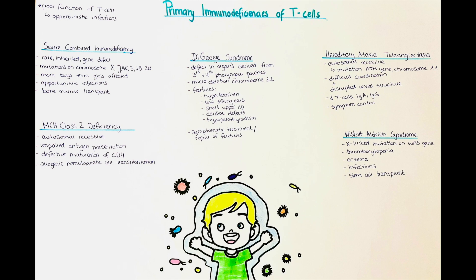We will start talking about severe combined immunodeficiency. It is a profound group of rare inherited immunodeficiency disorders, and many of them are linked to gene defects within the X chromosome. A mutation within JAK3 on chromosome 19 as well as a mutation on chromosome 20 can also cause severe combined immunodeficiency. Most causes are X-linked, but mutations in chromosomes 19 and 20 are also known to cause it.